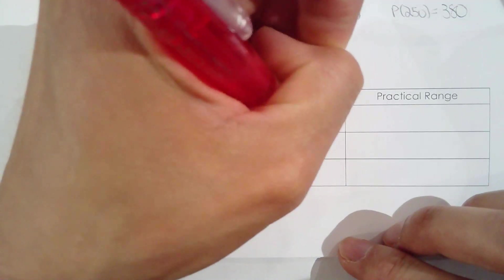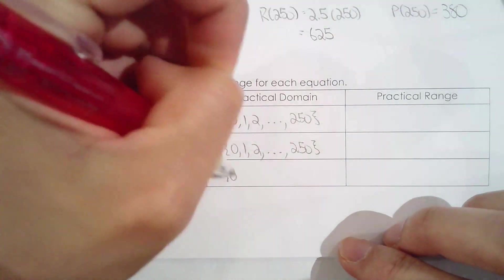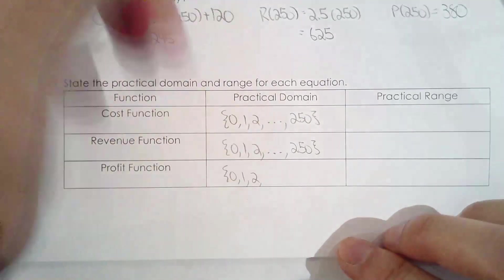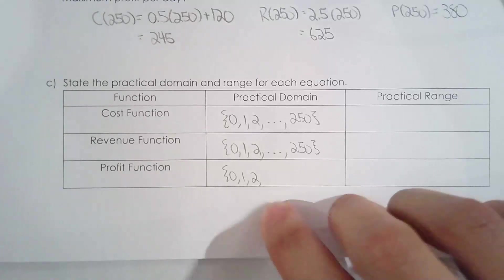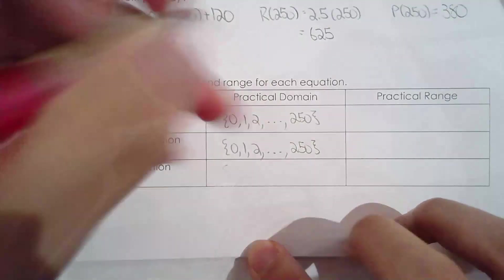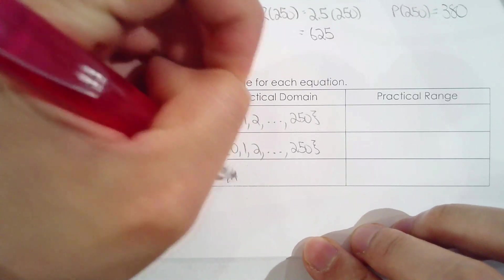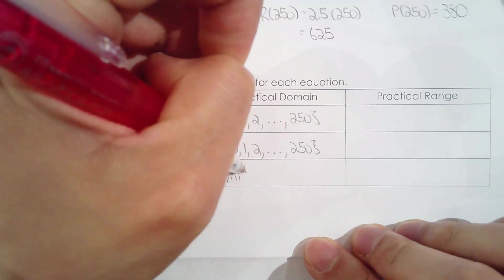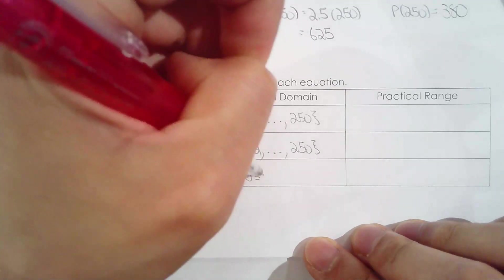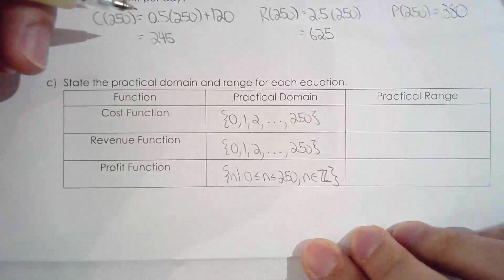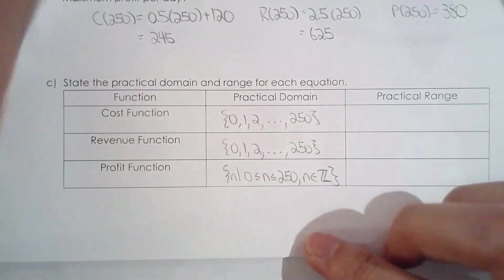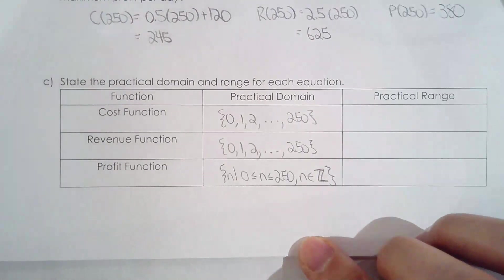It's not any real number from 0 to 250. There's an alternative way to write this. You can say any integer from 0 to 250. This is called roster notation, where you just list out values. Or you can say n is a value such that it's any integer from 0 to 250, where n is an integer, or you can say whole number. I think it's easier just to do roster notation, just list it out. But it's up to you.